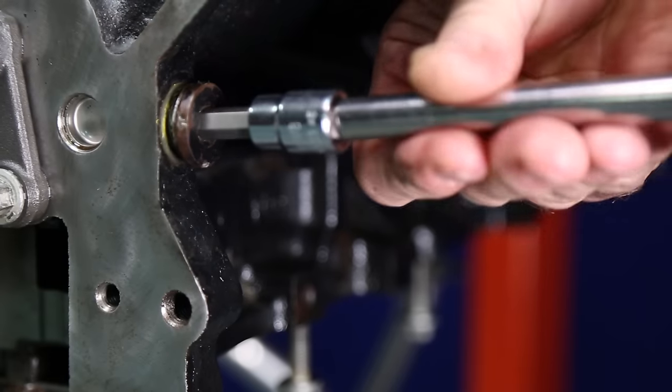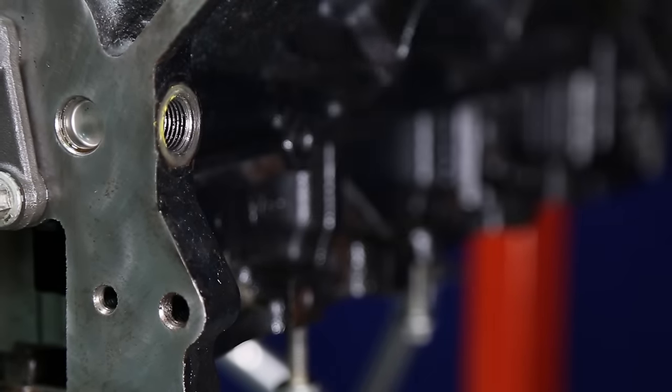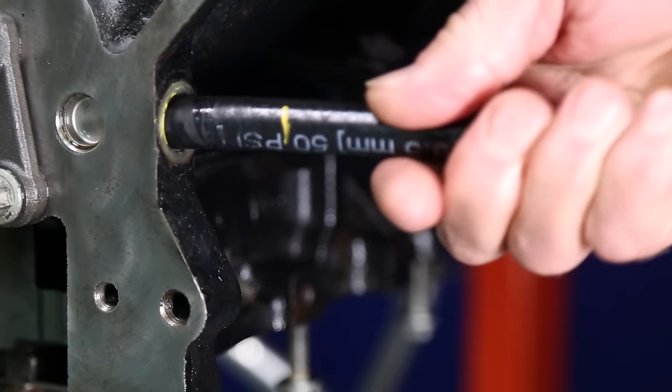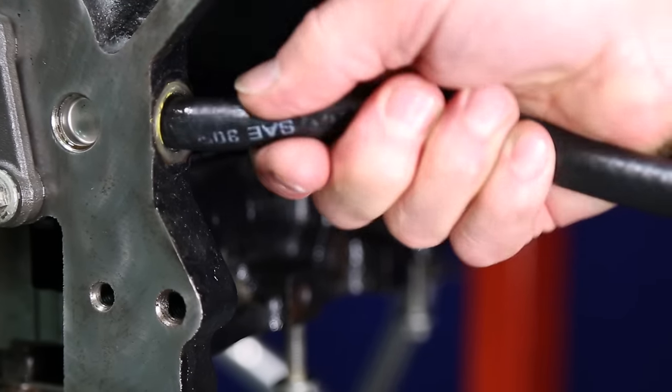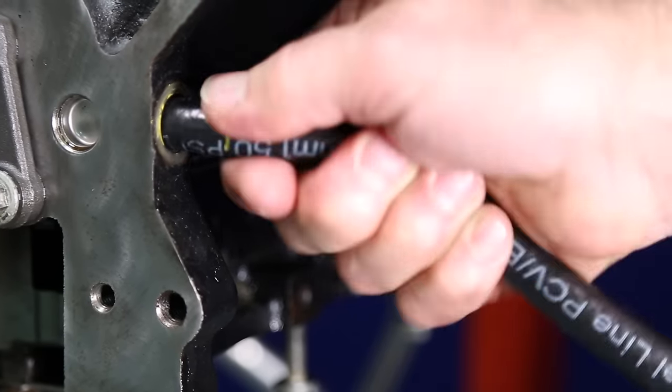Using a number 8 hex Allen wrench, remove the oil galley plug on the left lower front corner of the block. Using a 3/8 inch ID by 2 foot long length of fuel hose, screw it into the threaded hole in the block about an inch and a half where you removed the plug.